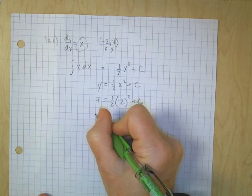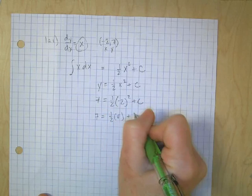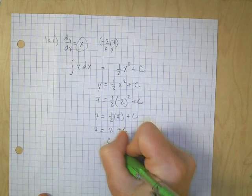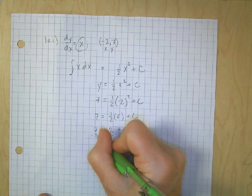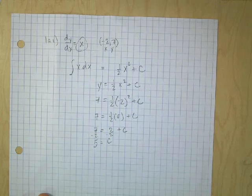So 7 equals 1 half times 4, plus c, 7 equals 2, plus c, minus 2 from both sides. And for some of you, I recommend you show every step so you don't make mistakes with your adding. So I get c equals 5, but that's not the answer.